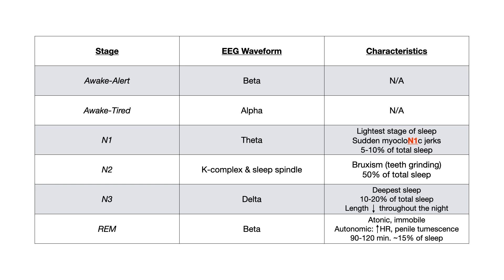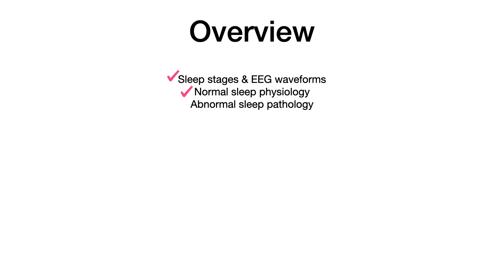REM sleep takes up about 15% of your total sleep, and each REM stage is itself 90 to 120 minutes - that is also very good to know. So at this point we've talked about the sleep stages, EEG waveforms, and normal sleep physiology. Now let's wrap up by talking about abnormal or pathologic sleep.